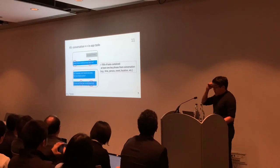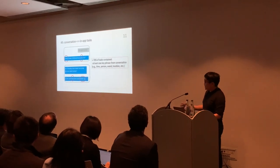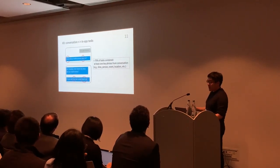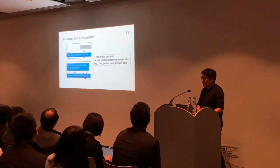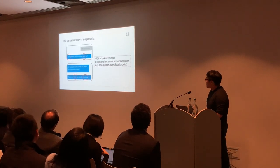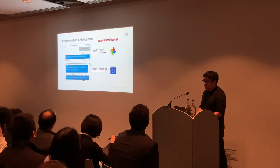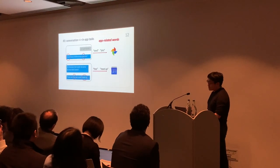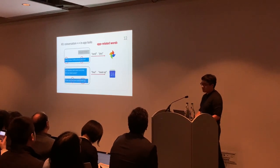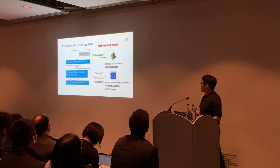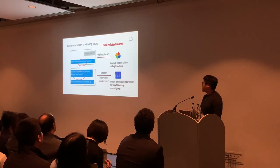When users want to copy text from a conversation to complete a task, it wastes another 3 seconds. There is also a semantic connection between the conversation and subsequent tasks happening in other apps. More than 70% of tasks contain at least one key phrase, such as time expression, person name, event name, or location name. Some tasks indicate an implicit intent to access certain apps, and others can be used to characterize specific actions happening in those apps.